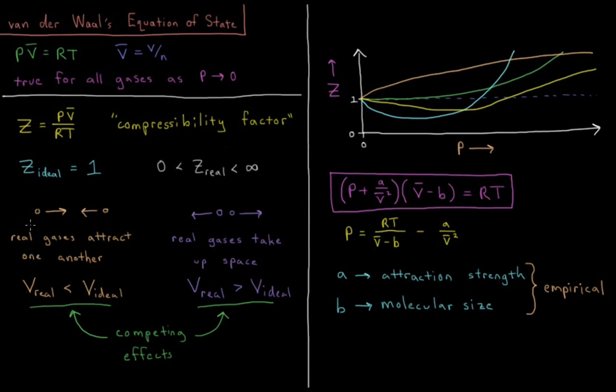Real gases attract one another to some extent, and when they attract one another, this means that the volume of a real gas would be less than the volume of an ideal gas. The effect of them attracting one another is they might tend to cluster together. There'd be less effective volume or fewer effective particles as they might cluster together into dimers or trimers. When they're attracted to one another, the compressibility factor is going to decrease below one.